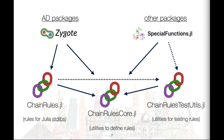They do not need to depend on the ChainRules package. To be able to test custom rules using finite differences, SpecialFunctions also has a test-time dependency on ChainRulesTestUtils.